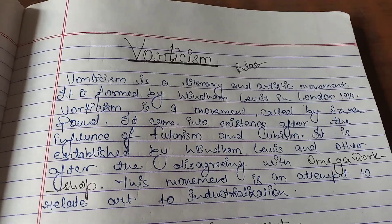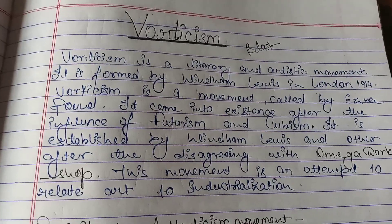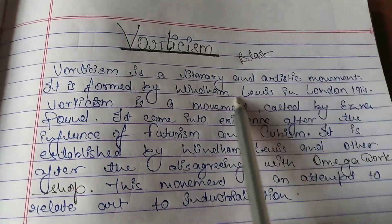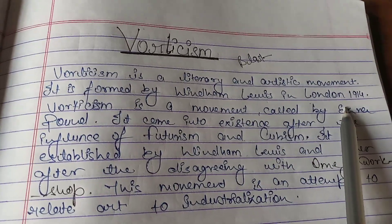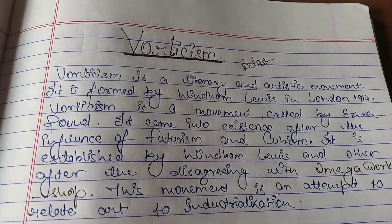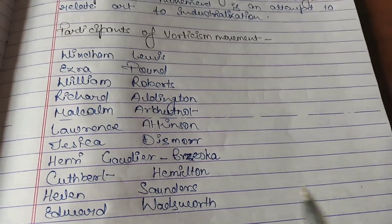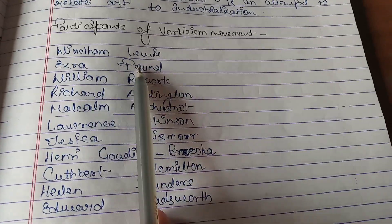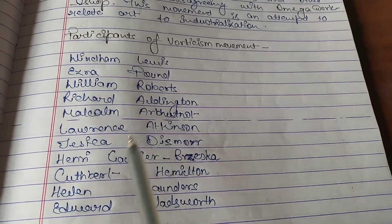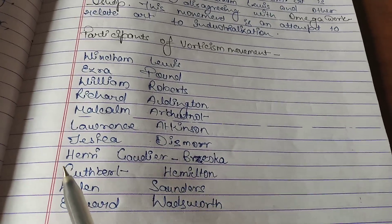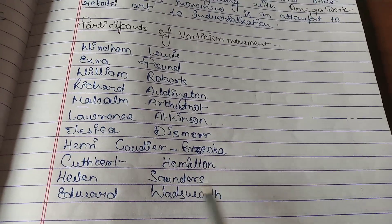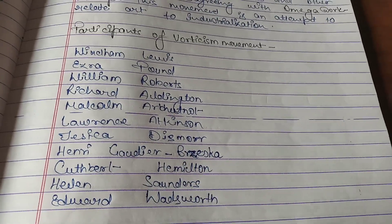There are important members of the Vorticism movement. Wyndham Lewis started this movement in 1914, and there are 11 participants in total: Wyndham Lewis, Ezra Pound, William Roberts, Richard Aldington, Malcolm Arbutnot, Lawrence Atkinson, Jessica Desmore, Henry Gaudier-Braska, Cuthbert Hamilton, Helen Sanders, and Edward Wordsworth.